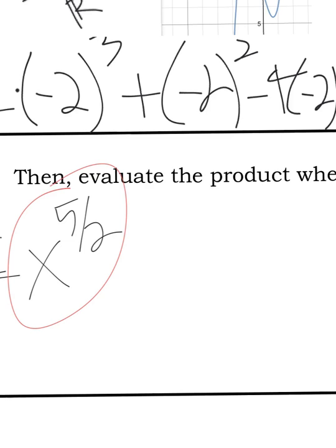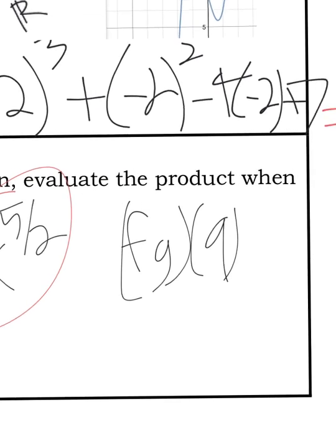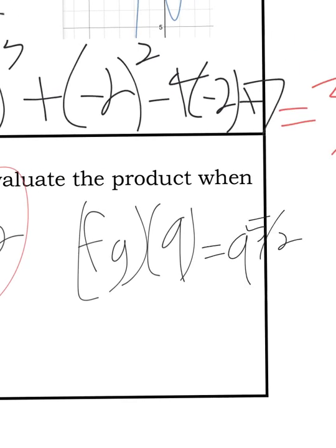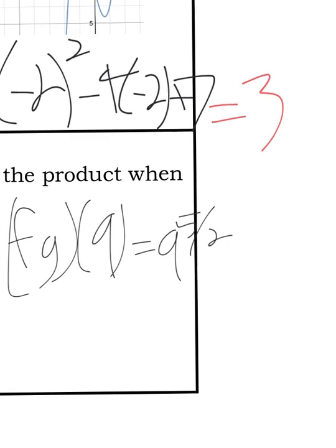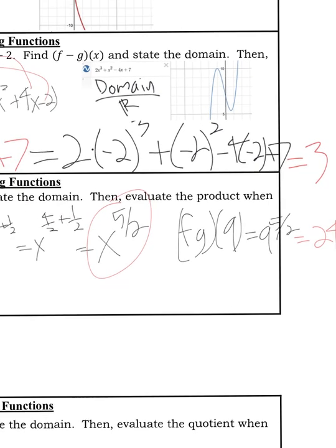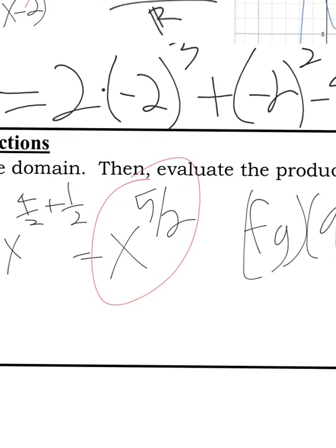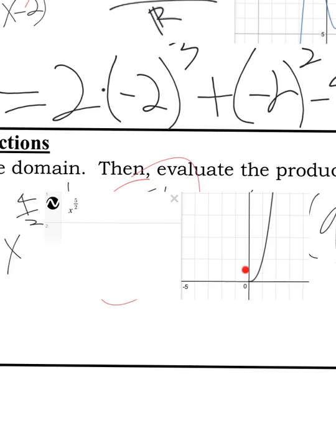you get x to the 5 halves. The next thing to do is to just plug in 9. So you're doing 9 to the 5 halves. Remember, the bottom number is your root. The square root of 9 is 3. 3 to the 5th power is 243. So if you typed in 9 to the 5 halves power, you'll get 243. Now let's just look at the graph of x to the 5 halves. You see here, we get this parabola that looks like it was cut in half. It's starting at 0, and then it's going up, but specifically, it's going to the right for the domain. So the domain here is x is greater than or equal to 0.